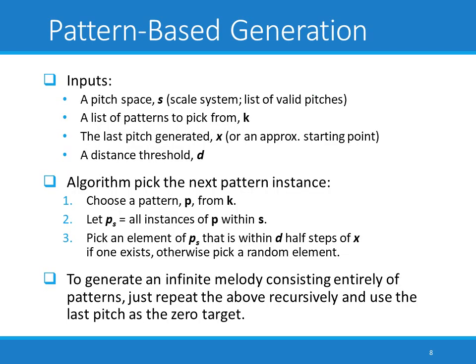Our algorithm is going to take four inputs. The first is a pitch space S — a collection of all pitches we can possibly play in a particular setting, which might be every pitch within a range or restricted to something like the G major scale within a range. We also take a list of patterns K to pick from. We need to know the last pitch generated, called X — and if nothing has been generated yet, we treat X as an approximate starting point. Finally, we take a distance threshold D, which regulates how far apart we want to allow the next pattern instance to be from the previous one.